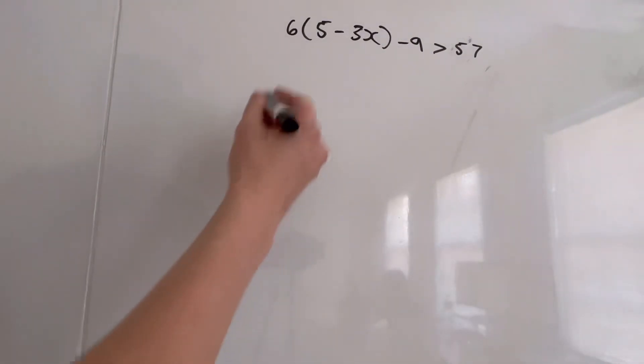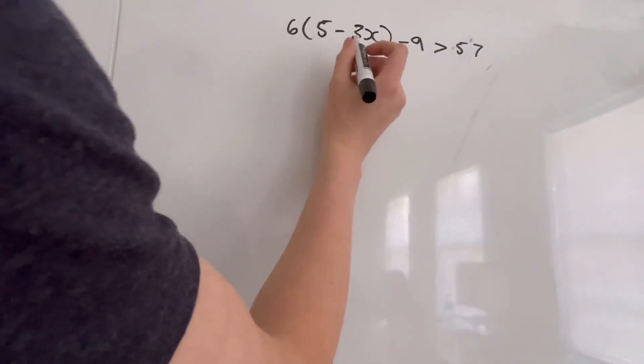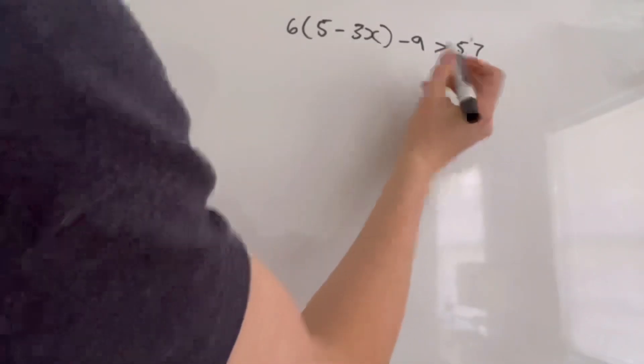All right, so in this problem, we have 6 times 5 minus 3x minus 9 is greater than 57.